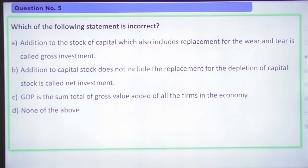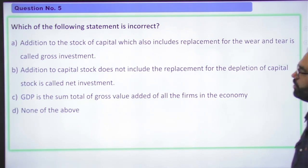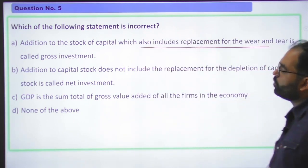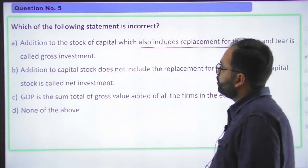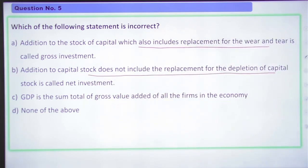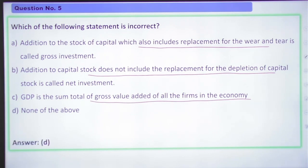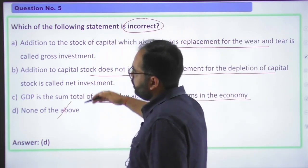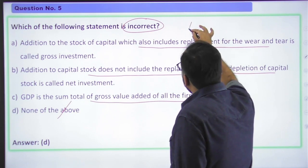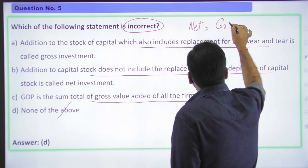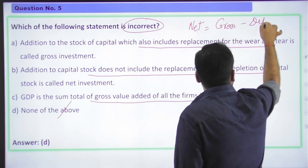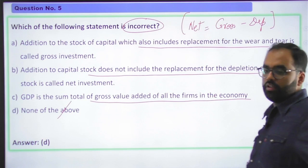Question number 5. Which of the following statement is incorrect? Addition to the stock of capital, which also includes replacement for wear and tear, is called gross investment. Addition to capital stock does not include the replacement for the depletion of capital stock, is called net investment. GDP is a sum total of gross value added for all the firms in the economy. And d, none of the above. Again, a very basic concept-based question and should be doable. Answer will be D. None of the above is incorrect. All three statements are correct. Why? Because we see that if we want net, we subtract depreciation from gross and we get net.